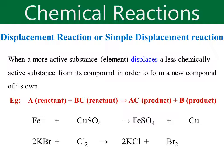Another example: Potassium bromide plus chlorine gives KCl plus Br2. Chlorine is more reactive and more active than bromine, so it is able to displace bromine from potassium bromide to take its position, forming potassium chloride solution.